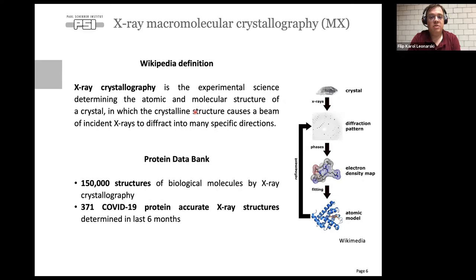X-ray crystallography is an experimental science that allows us to determine the atomic and molecular structure of a crystal by measuring how an x-ray beam is diffracted through it. The x-rays are diffracted into multiple directions and by knowing the intensities of these spots we can build the electron density of the structure and then the full atomic model. Today there are more than 150,000 structures of molecules solved with x-ray crystallography.